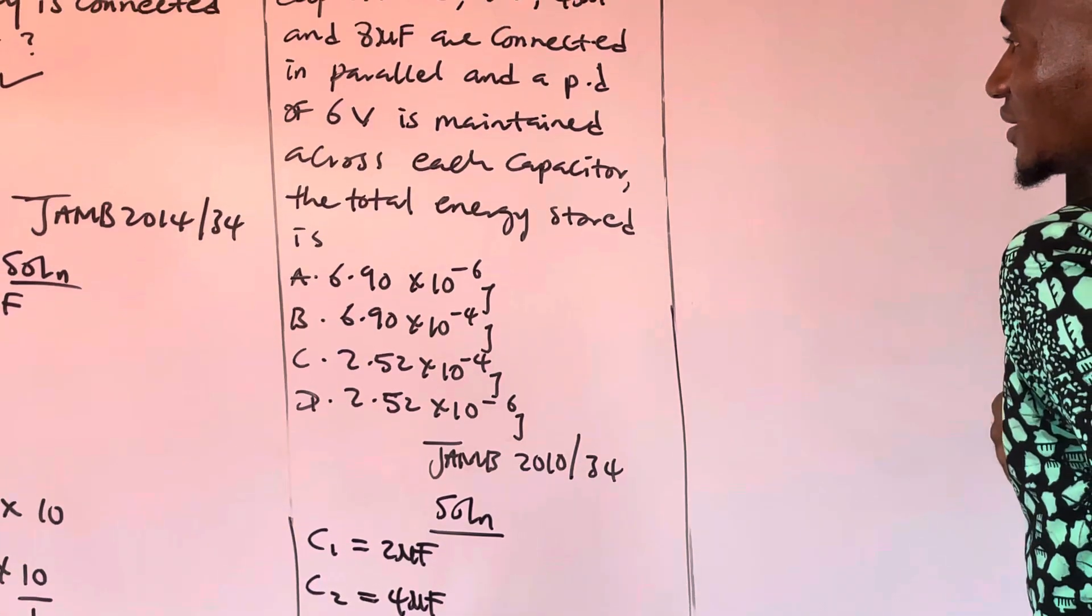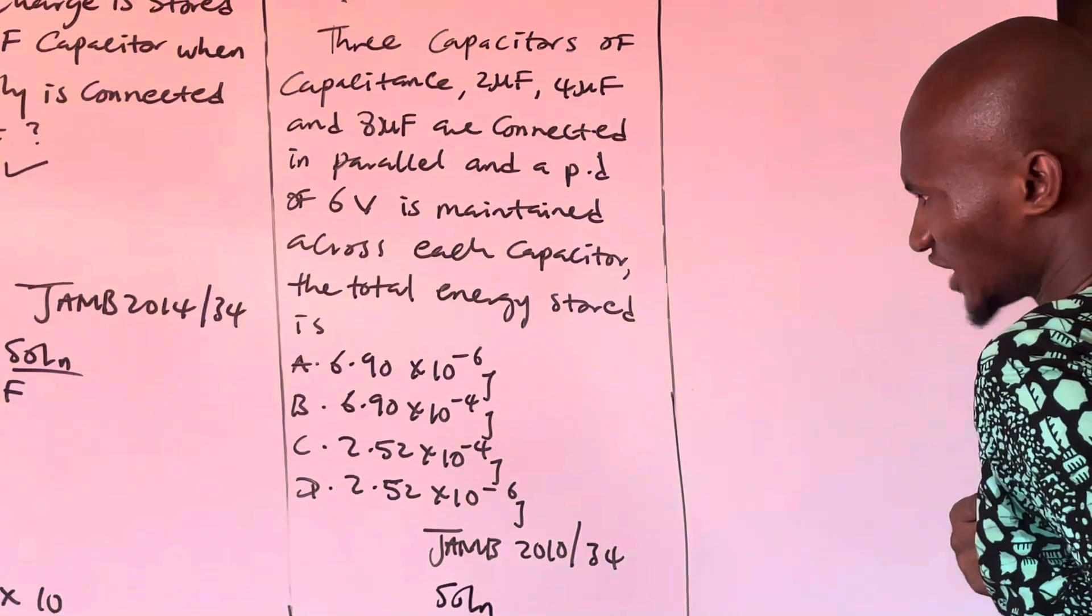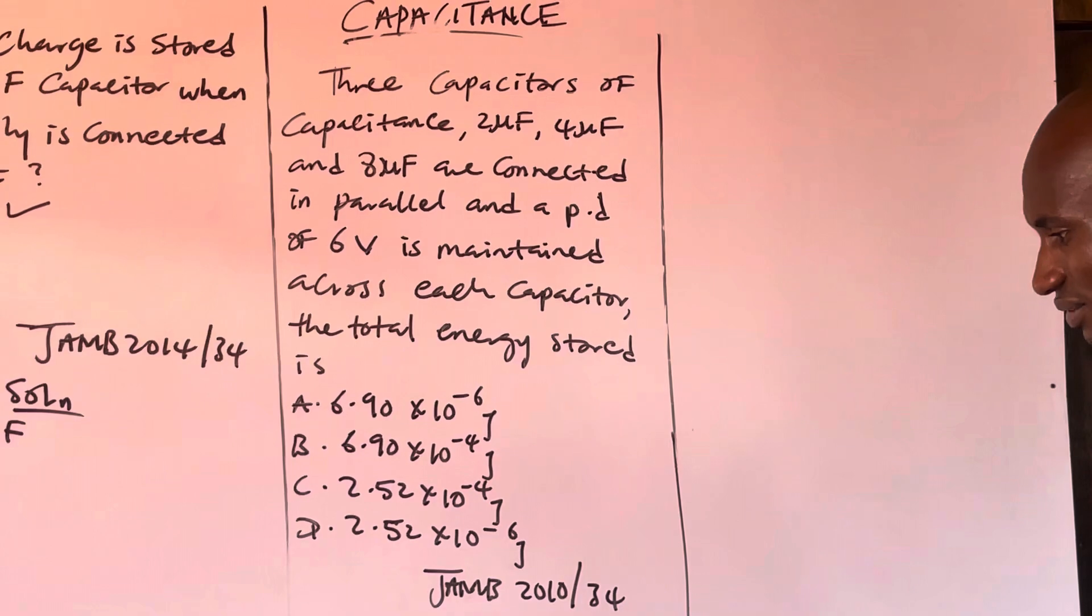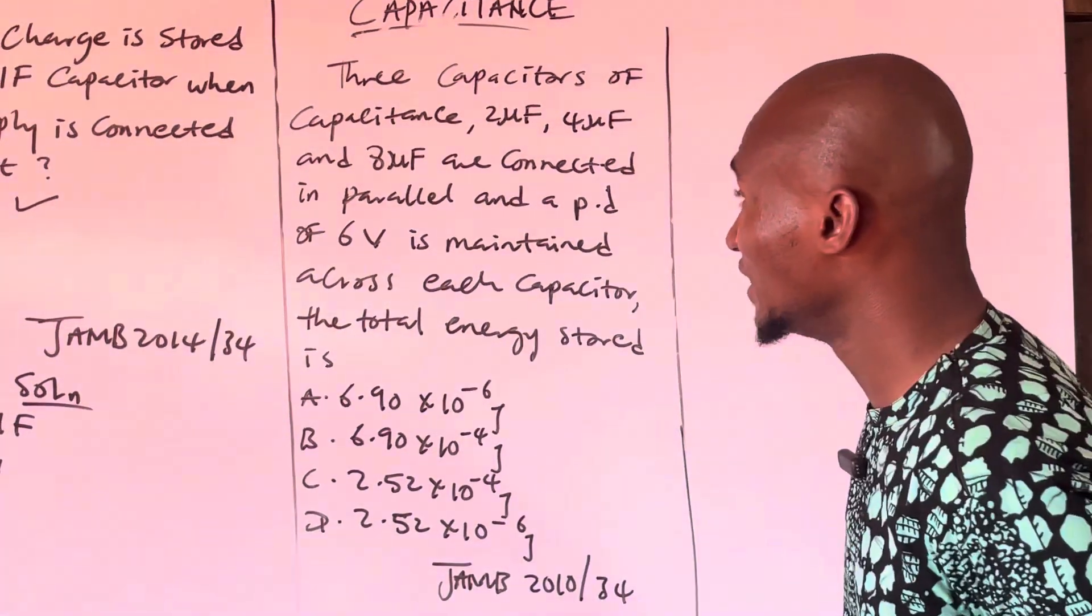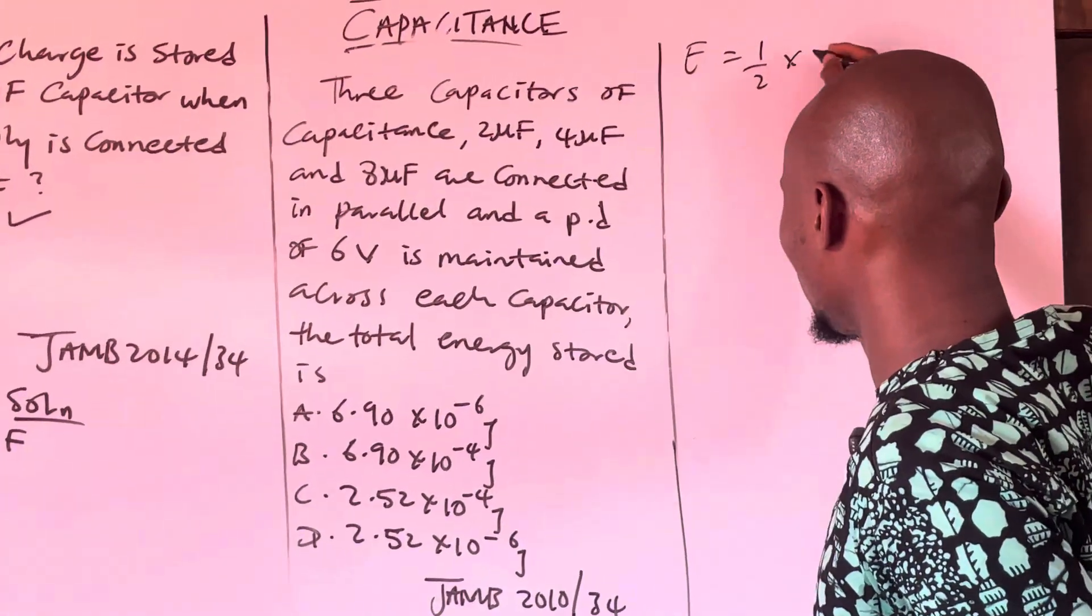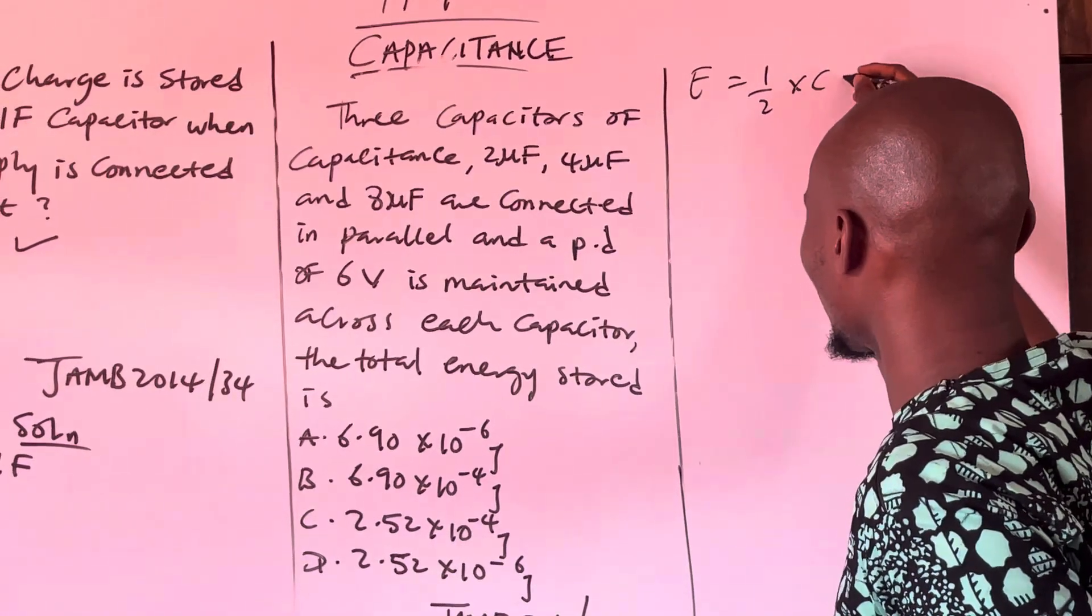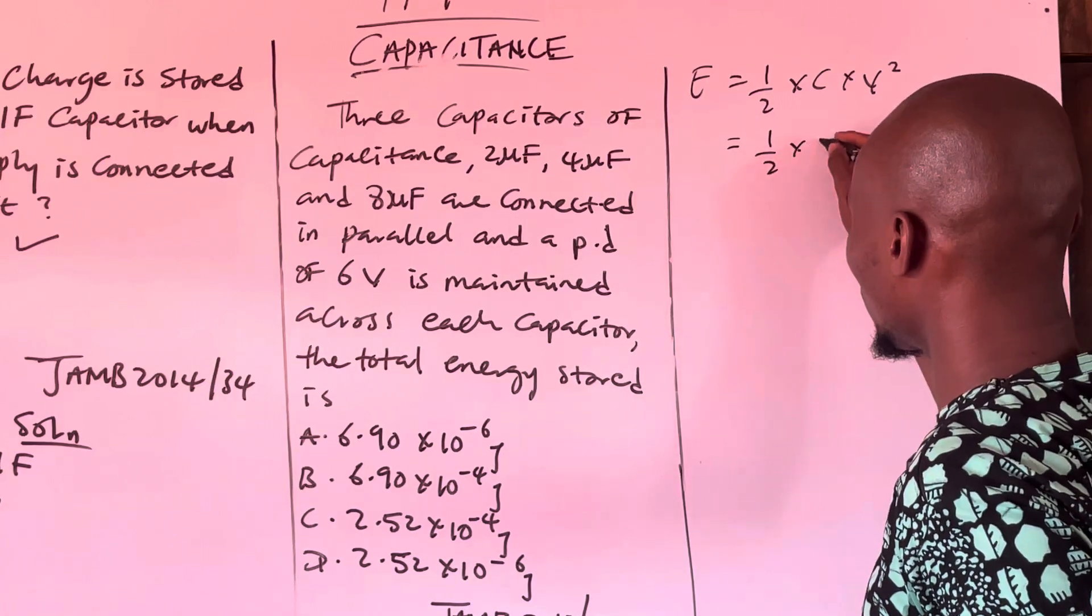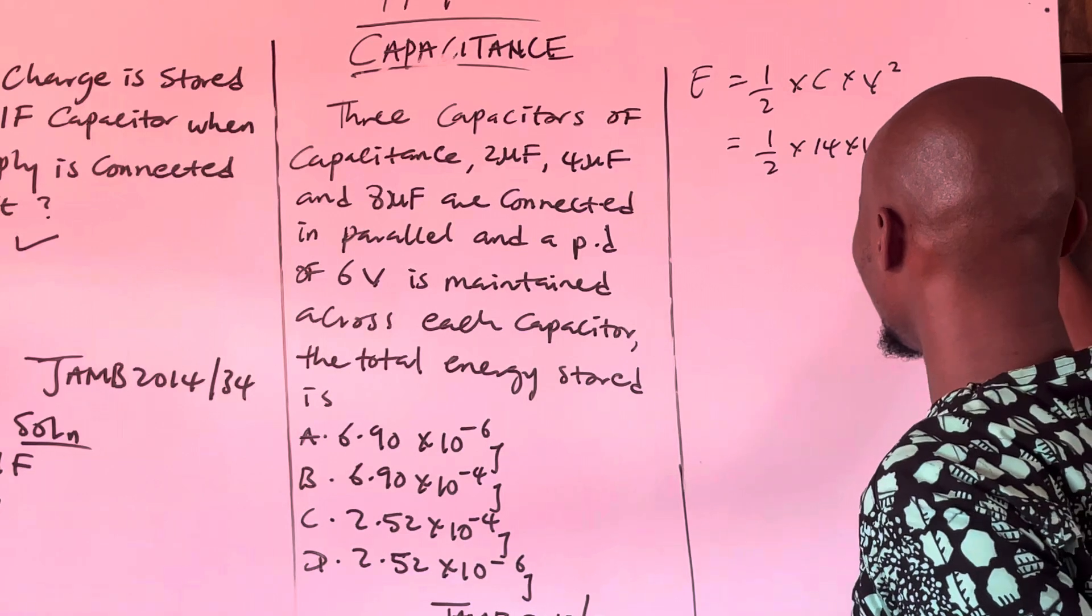And they said a PD of 6 volts is maintained across each capacitor. Total energy stored is... Total energy stored, E is equal to 1 over 2 times C times V squared.